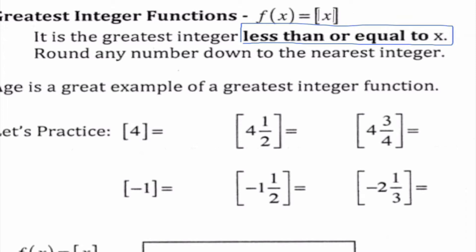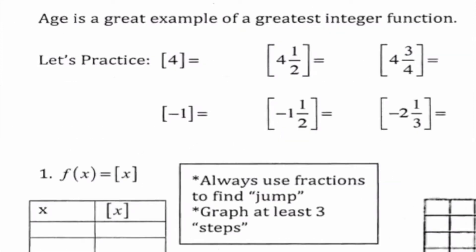This is a kind of a weird idea, because we are really used to rounding the way we've always been taught — if it's 5 or higher, we round up; if it's less than 5, we leave it as is. But in this particular case, we are rounding any number down to the nearest integer. And if we think about real life, the best example of this is age.